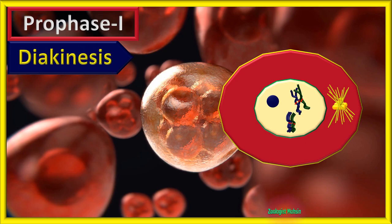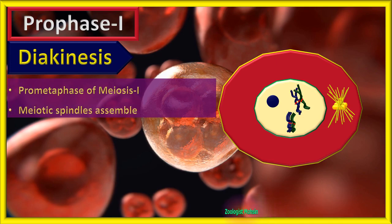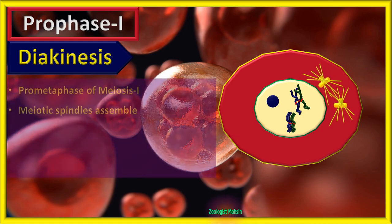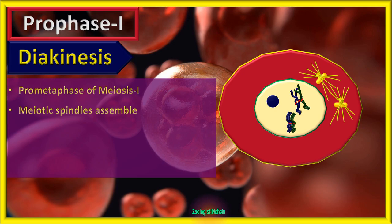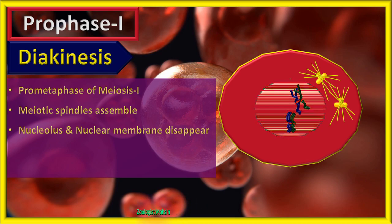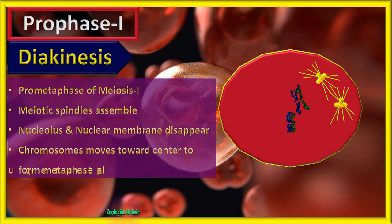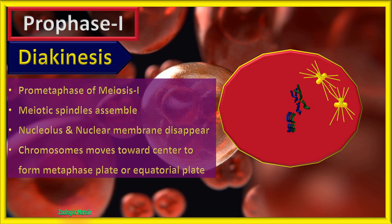The next phase is diakinesis, also called pro-metaphase of meiosis 1. Meiotic spindles assemble — spindles and centrosomes are present in the cytoplasm around the nucleus. The nucleolus and nuclear membrane disappear at diakinesis, so chromosomes are now openly in the cytoplasm. Chromosomes then move towards the center to form the metaphase plate or equatorial plate.